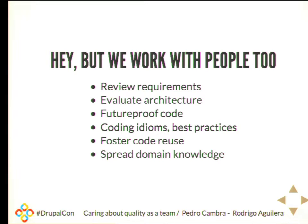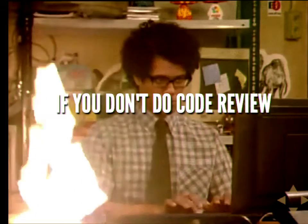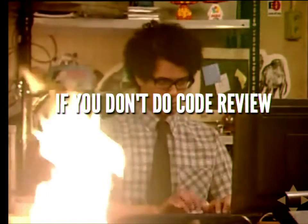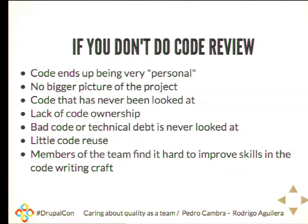Review happens in other professions like journalism. Why is it not happening in software development? What happens if you don't do code review? You look at the fire and continue to write your email. Code ends up being very personal — there is that part that only one guy knows about, and all the team should be aware of that. We get a lot of monster code around. There is no bigger picture of the project. You get code that is very obscure, very dark because no one looks at it. Technical debt gets ignored.